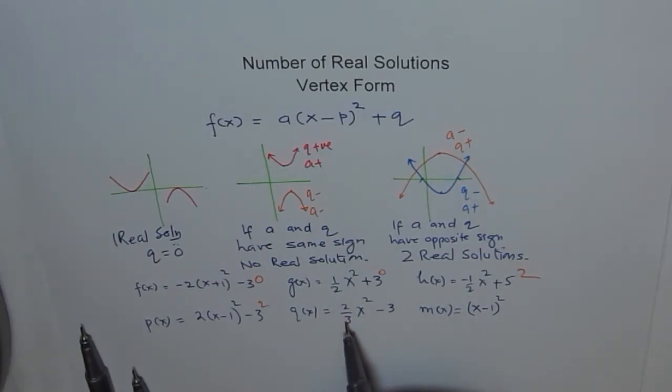Here, A is positive. That means you are going up and negative. This is similar to this. Exactly same, two solutions. How about this? (x - 1)². q is zero. That means one solution. It is so simple to find number of solutions.